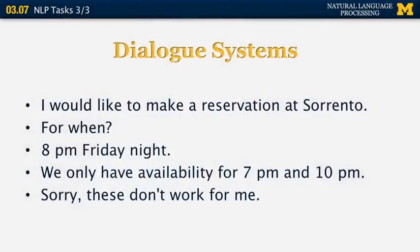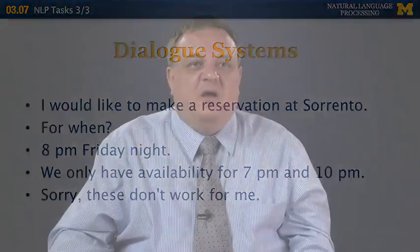A few more examples of natural language tasks: one deals with dialogue systems. Consider a realistic dialogue — 'I would like to make a reservation at Sorrento.' 'For when?' '8pm Friday night.' 'We only have availability for 7pm and 10pm.' 'Sorry, that doesn't work for me.' This is a typical dialogue between a user and either a human or a dialogue system that tries to understand the human's questions and answer them appropriately.